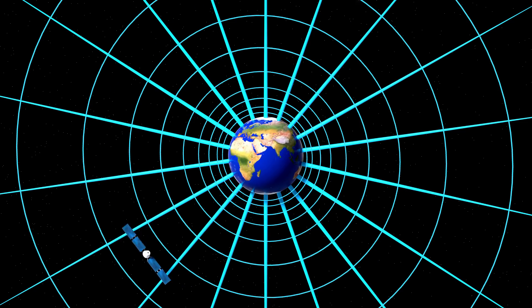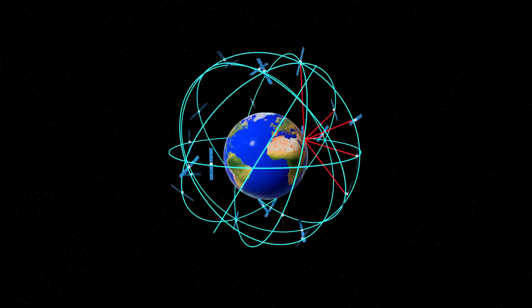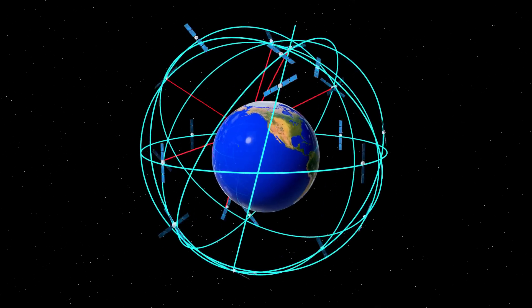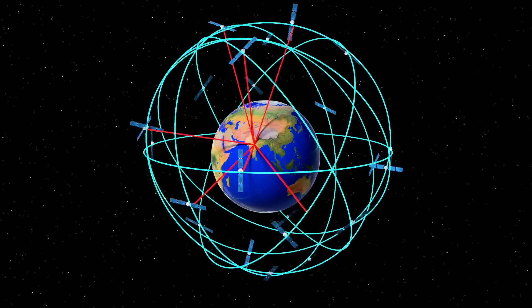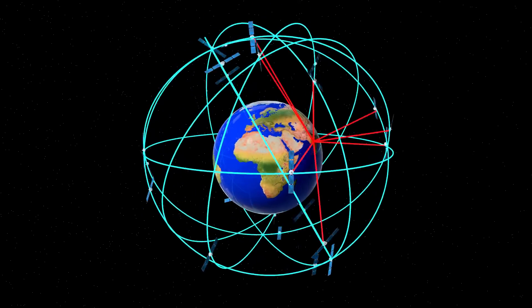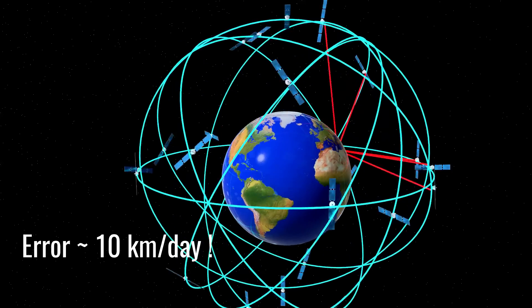To compensate for this, a theory of relativity equation is integrated into the computer chips and adjusts the rate of the atomic clocks. Without this application of the theory of relativity, the GPS would have produced an error of 10 km every day.